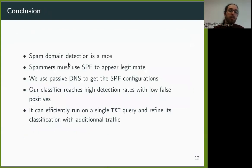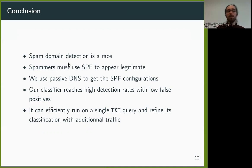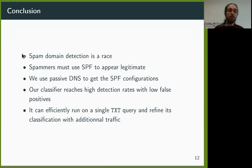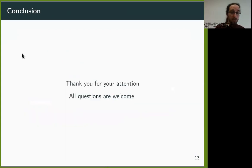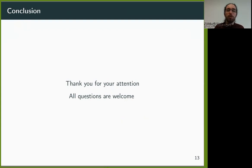To conclude, detecting spam domains is a matter of speed. We want to detect them as early as possible so that we can blacklist them before the spam campaign. In this work, we classify newly active domains based on the SPF configuration and passive DNS traffic. Our classifier reaches high detection rates with low false positives, even from a single TXT query. This work highlights that those features could substantially improve existing spam detection systems by leveraging features available in the very early stages of the spam domain lifecycle. Thanks a lot for your attention — there are many more details in the paper, so please check it out, and I'll be happy to answer any questions.